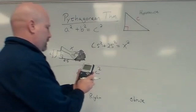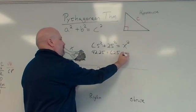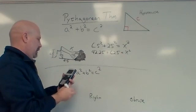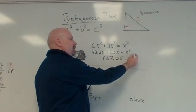And so now we grab a calculator. 6.5 squared is 42.25. 25 squared is 625. We add those up. And we get 667.25. Now, to solve for X, I need to get rid of the square. So we square root.